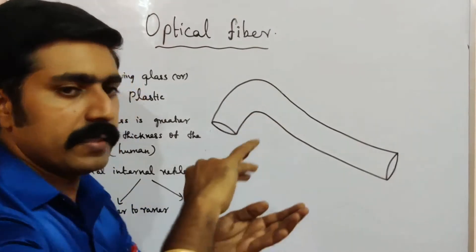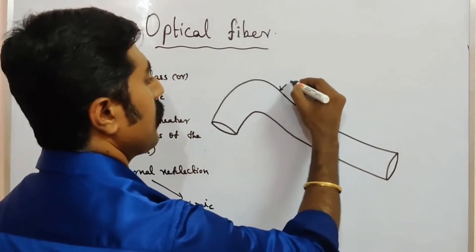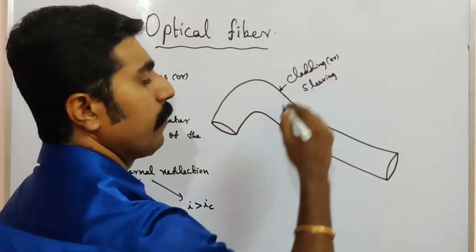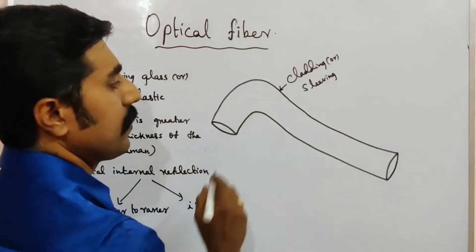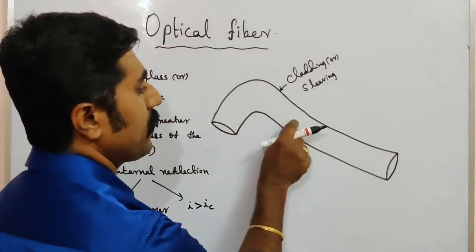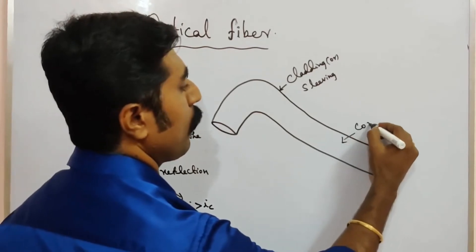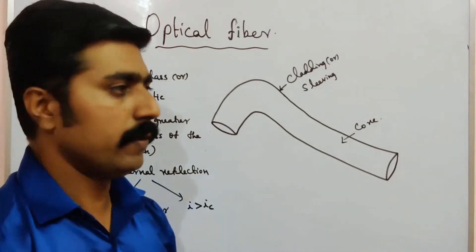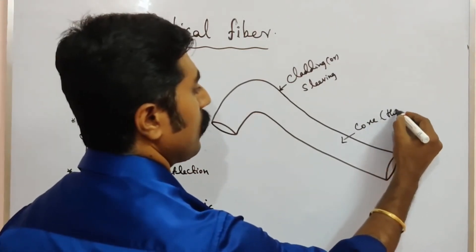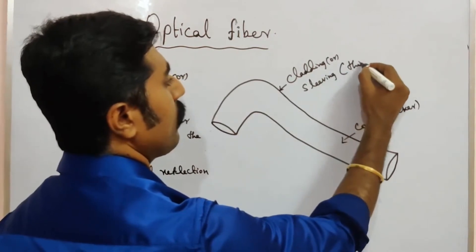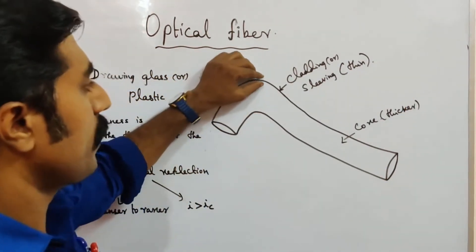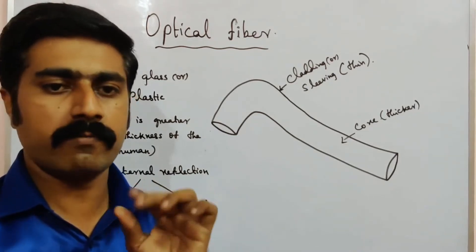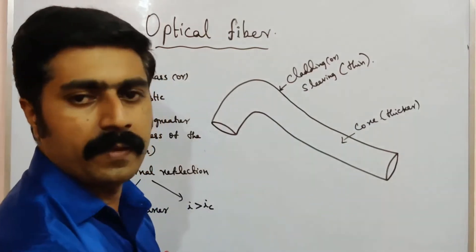The outer layer of the optical fiber is called cladding. The density of the cladding is very less compared to the inner part, which is called the core. The core has a greater refractive index and is thicker, while the cladding is thin with a lower refractive index.